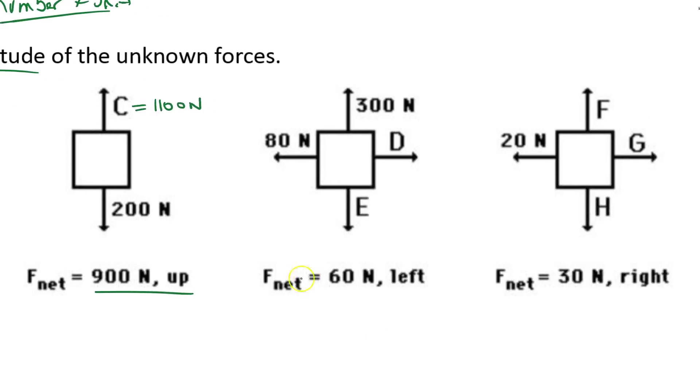How about this one? It says F net is 60 newtons to the left. Well there's nothing up or downwards. So these two must cancel each other out. So this E is going to be equal to 300 newtons. Now the 80 and the D, the left must be 60 more than the right. So in this case I know that D must be equal to 20 newtons. So that when they're combined together.